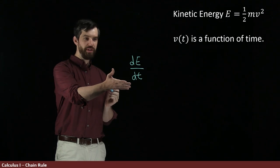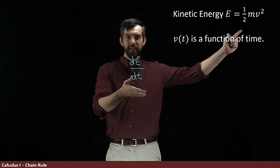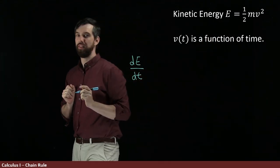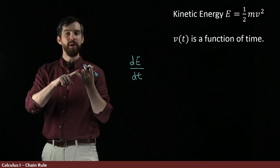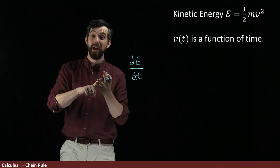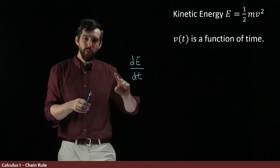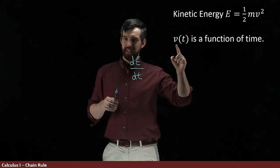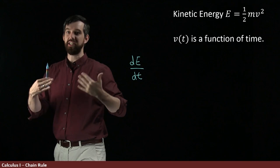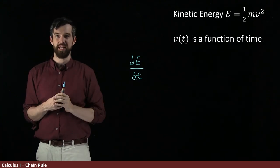Now, what the chain rule is going to say is that there's not a t explicitly in the kinetic energy formula. It depends on m, which we're treating as a constant. It depends on the velocity, but there's no t immediately. It's only then that the velocity is itself a function of t, that the t sort of sneaks its way into the kinetic energy formula.